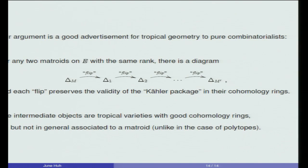The intermediate objects that you see in the flip sequence are certain tropical varieties with good cohomology rings. They satisfy Hard-Lefschetz and Hodge-Riemann, but they are not in general tropical varieties associated to a matroid. So in order to prove this matroid statement, you have to somehow leave the world of matroids and come back. And if you note the analogous story for simplicial polytopes surrounding the g-conjecture, then this is in contrast with their case, where you flip a polytope to get another polytope to get another polytope to arrive at the given polytope. There you never have to leave the world of polytopes, but here you might have to leave the world of matroids.